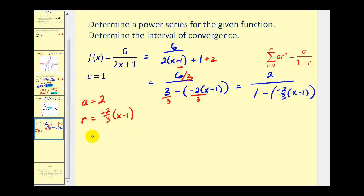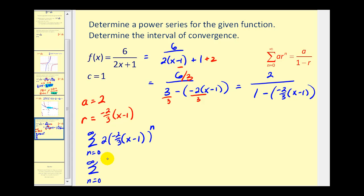Our infinite geometric series is the summation from n equals zero to infinity of a, which is two, times r to the power of n, where r is negative two-thirds times the quantity x minus one. We can further simplify by factoring out negative one to the power of n, combining the factors of two into two to the power of n plus one in the numerator, with x minus one to the n and three to the n in the denominator. These formulas are equivalent; the latter more closely resembles textbook form.